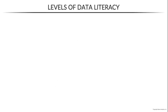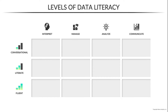Next up, let's talk about how these data literacy levels — conversational, literate, and fluent — map to the core skills we discussed earlier: the ability to interpret, manage, analyze, and communicate with data. These are intended to serve as examples to help illustrate the types of skills we tend to see at various levels of literacy. There are always exceptions depending on the context, so this really isn't a definitive set of rules or guidelines.